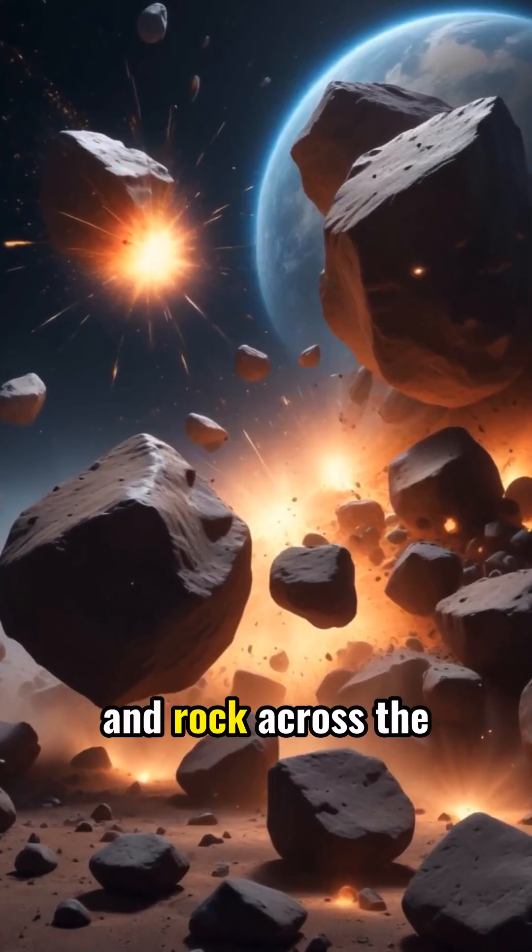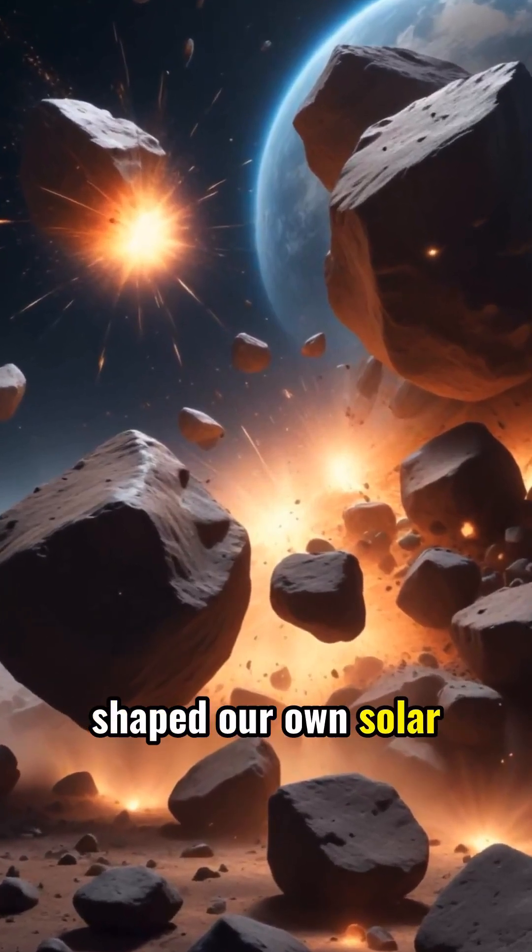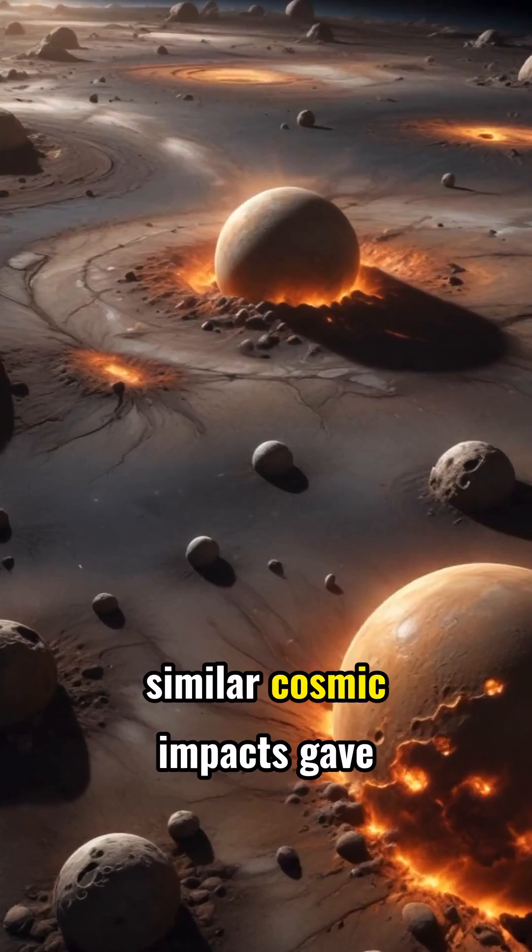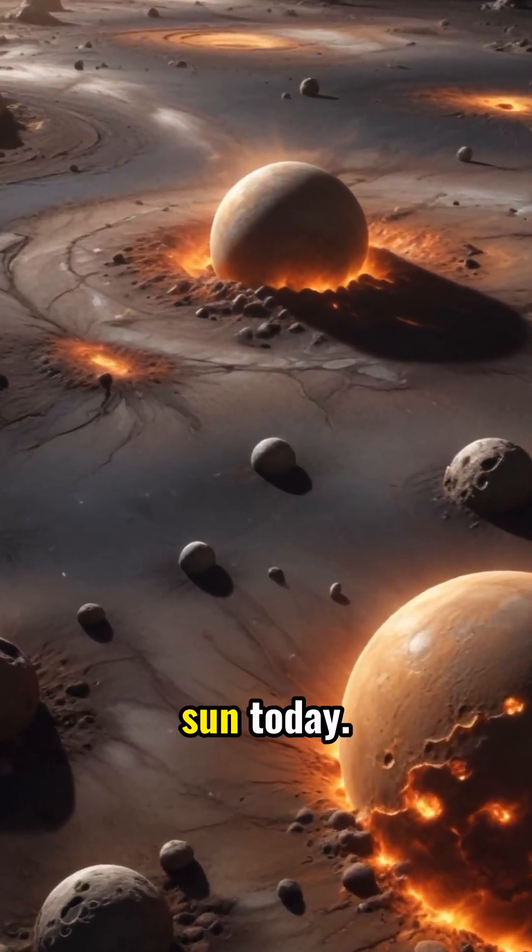Each collision throws dust and rock across the young system, a process that once shaped our own solar system. Billions of years ago, similar cosmic impacts gave rise to the planets and moons orbiting our sun today.